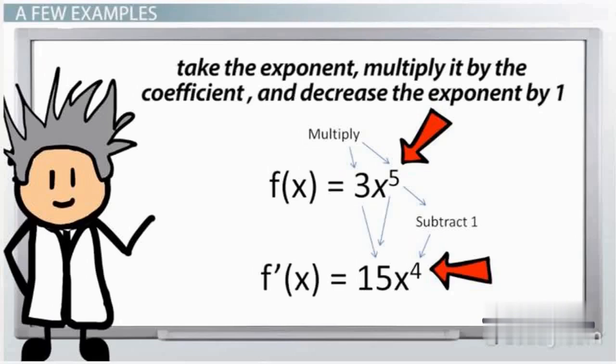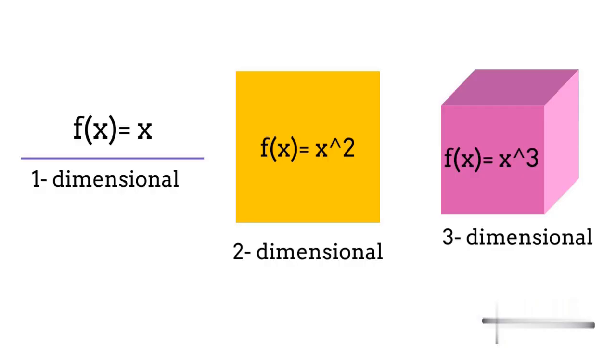So we generally say that to find the derivative of any function f(x), we take its exponent, multiply it by the coefficient, and decrease the exponent by 1. Also we have seen its visual interpretation for line, plane and cube, so for higher order dimension we can conclude that the visual interpretation is same.